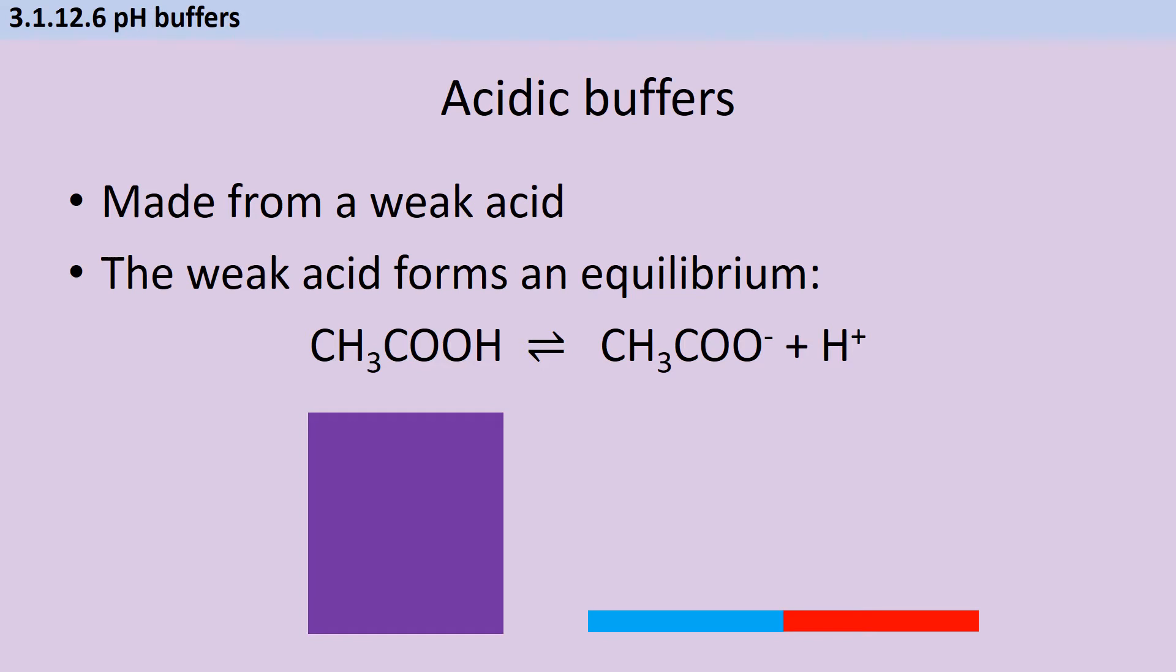Acidic buffers, which can buffer pHs below 7, are based on the equilibrium that happens when a weak acid dissolves in aqueous solution and dissociates to make anions and hydrogen ions. It's important that you think of these as equilibrium questions. So, when we get to the calculations, you're going to need to know all of your Le Châtelier chemistry from Unit 6 in Year 12.